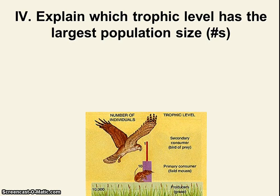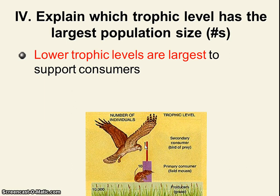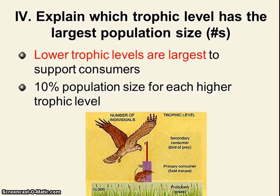Next Roman numeral: explain which trophic level has the largest population size. This is our pyramid of numbers. Which trophic level — the producers or one of the consumers — is the largest? Looking at the diagram, which one seems the widest? The grass seems the widest. Looking at the numbers, this says 10,000 organisms of grass versus only 10 mice versus only one top carnivore bird. The lower trophic levels, specifically the producers, have the most numbers because they have to support the food web so upper organisms will have enough food. We know from the energy pyramid that a lot of energy gets lost — only 10% moves on.